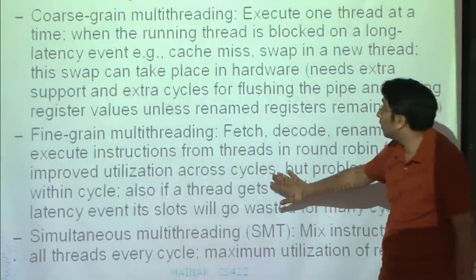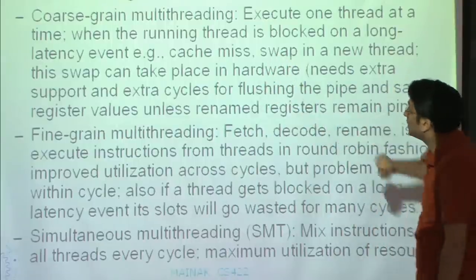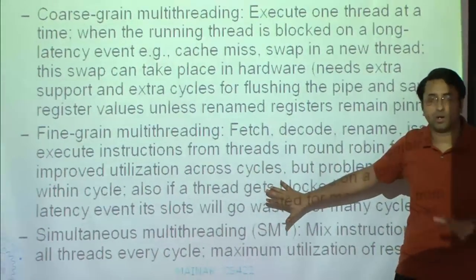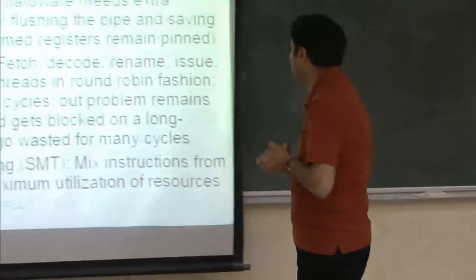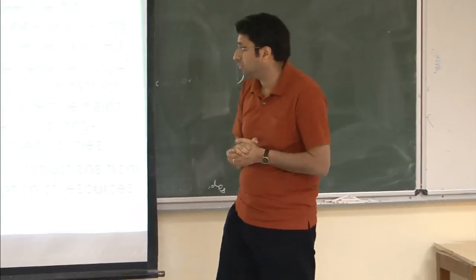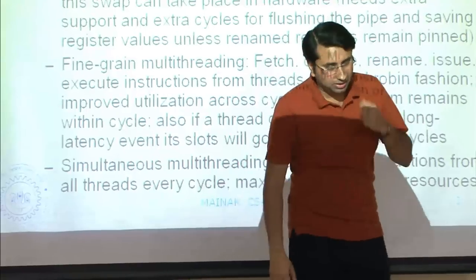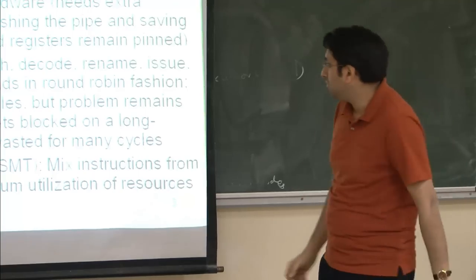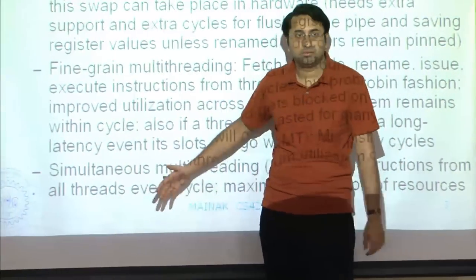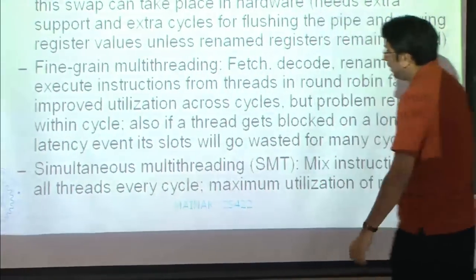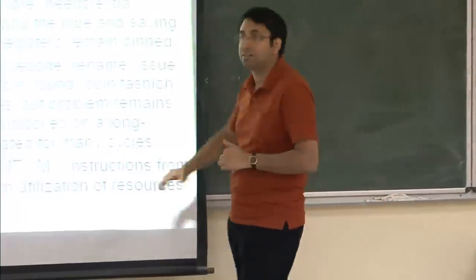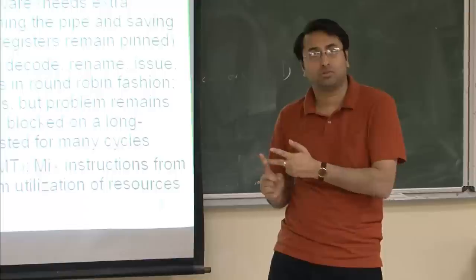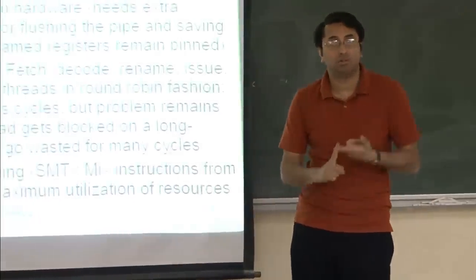In fine-grained multi-threading, utilization improves across cycles, but the problem remains within a cycle. Due to resource shortage, you may not be able to exploit all available resources. For example, if the hardware provides four issue slots but thread one only has two ready instructions in a given cycle, 50% of the issue slots go to waste. Also, if a thread gets blocked on a long latency event, its slots go wasted for many cycles — if you have two threads and thread one is blocked, all odd cycles go idle. That's not a good thing.